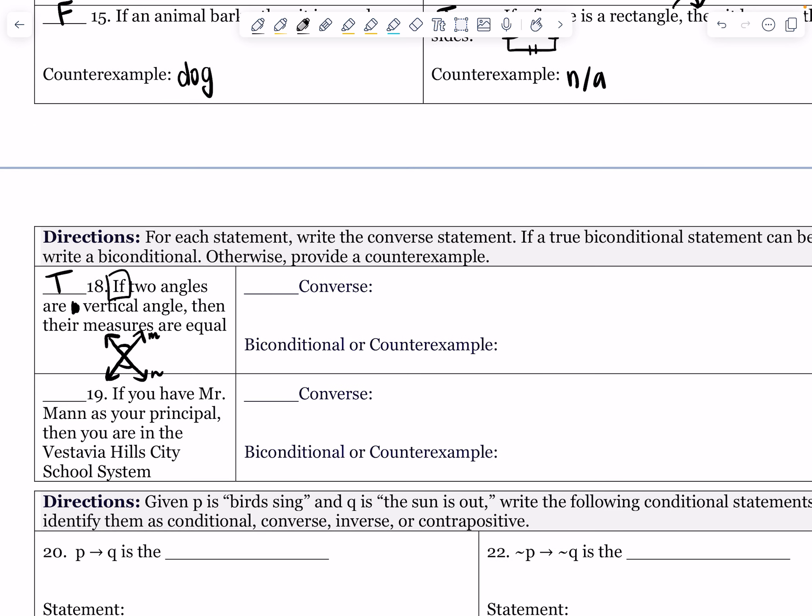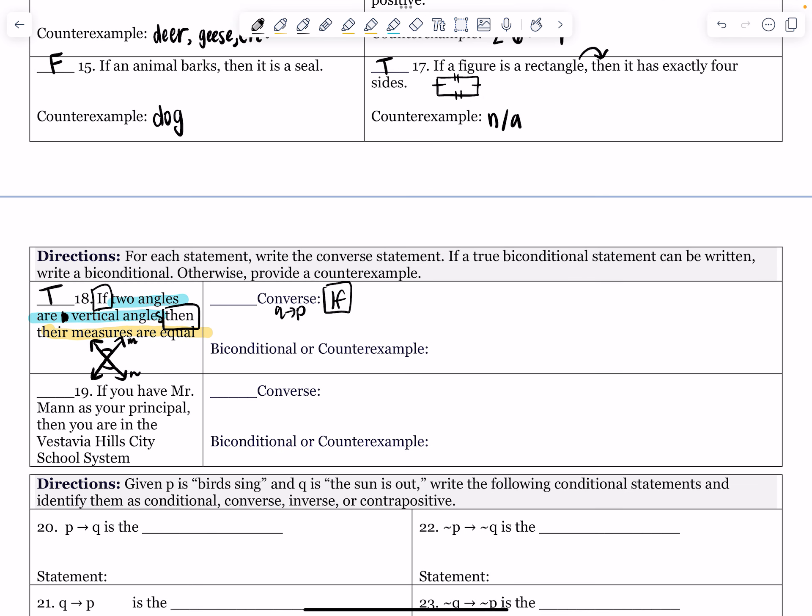So let's see what our converse says. Here's our if, here's our then. Two angles are vertical angles, then their measures are equal. What does the converse say? Remember, converse is if Q then P. So if yellow then blue. You could say this two ways. You could say if their measures are equal, or you could say if two angle measures are equal.